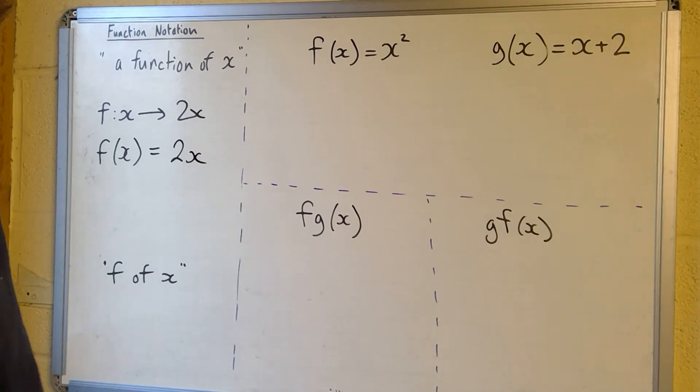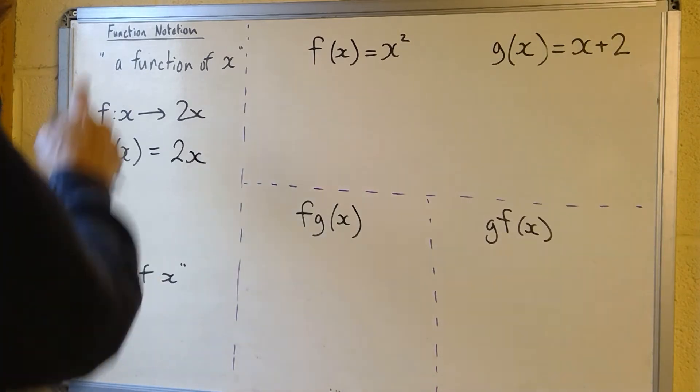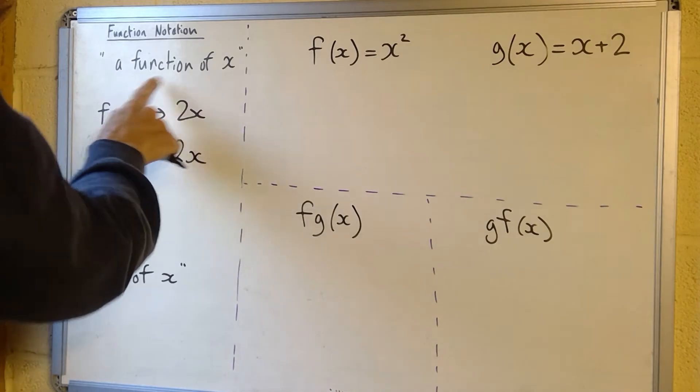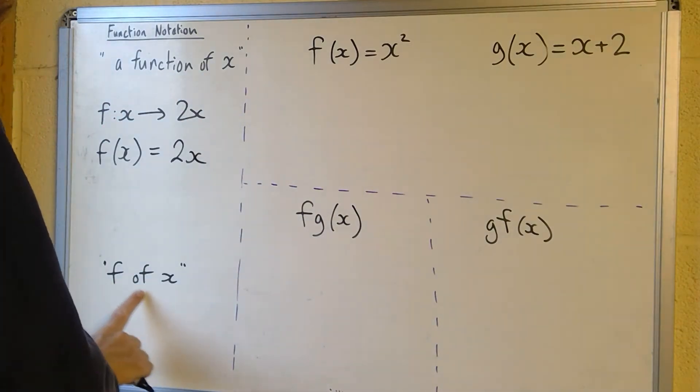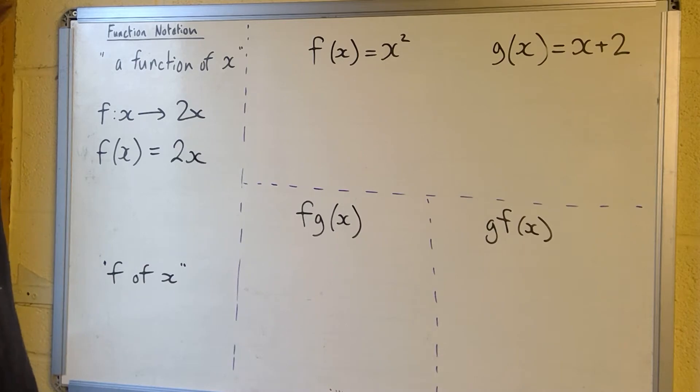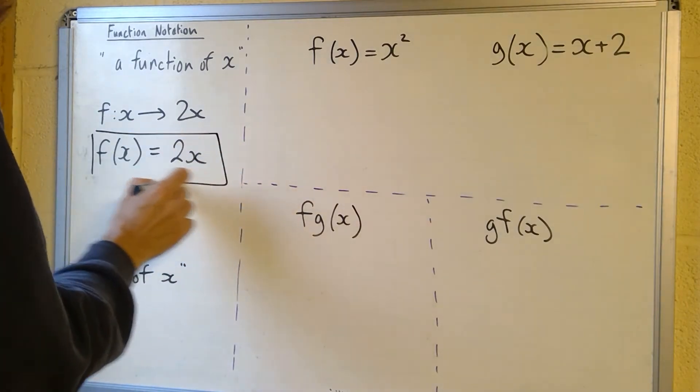There's a whole host of functions we can have. This tends to get abbreviated when we're saying it. Rather than a function of x, we tend to call it f of x. So if I talk about f of x, it means a function of x.